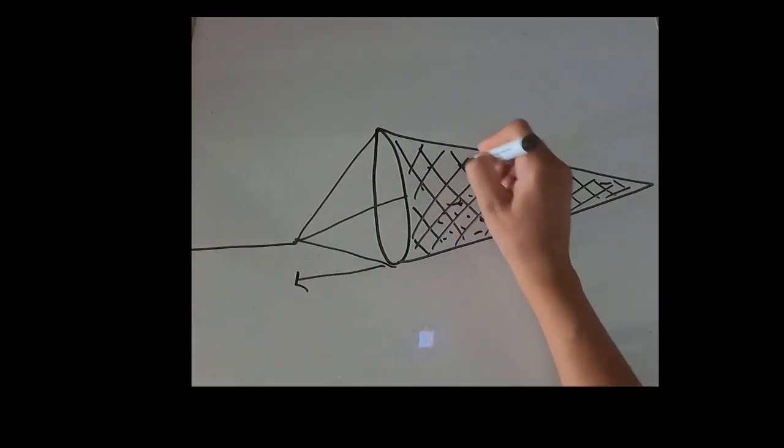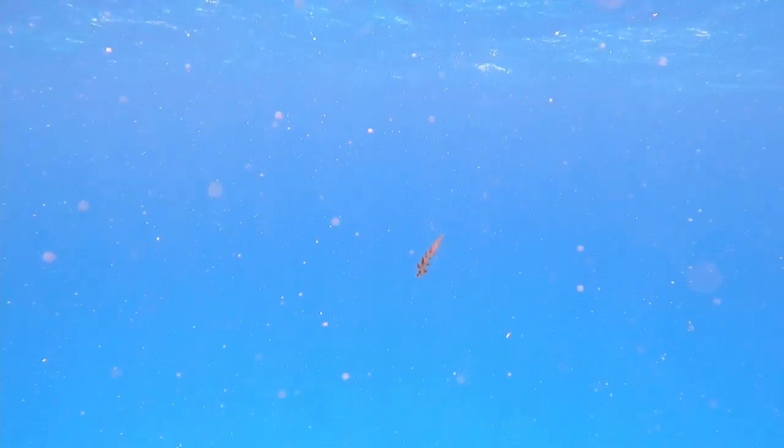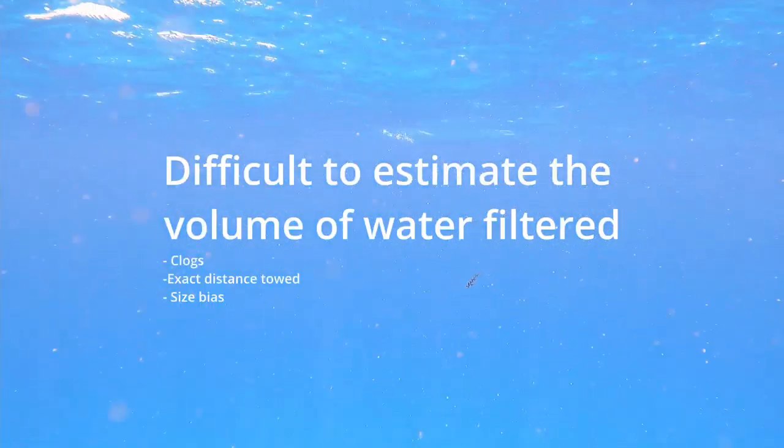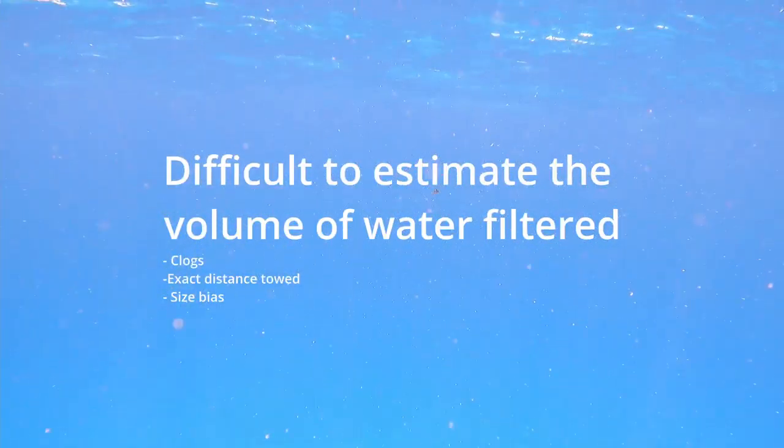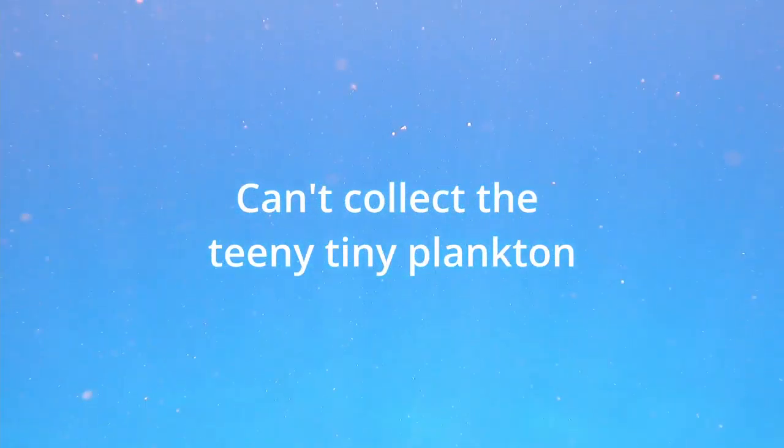The advantage to the plankton net is that it already concentrates the plankton and is easy to use. On the flip side, most nets are not fine enough to catch all of the plankton, since many plankton are teeny tiny. Some organisms may also be damaged when they come in contact with the net. Generally, plankton tows are seen as qualitative measures of plankton because it is very difficult to estimate the volume of water that is being filtered, and because of the inability of most tows to collect all of the plankton, since the net is not fine enough.